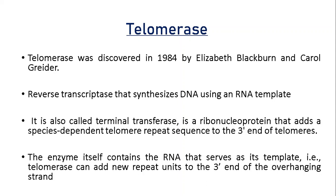Telomerase was first discovered by Elizabeth Blackburn and Carol Greider in 1984. It is a reverse transcriptase that synthesizes DNA using an RNA template. Unlike other reverse transcriptases, telomerase is also called terminal transferase. It is a ribonucleoprotein that adds species-dependent telomere repeat sequences to the 3' end of telomeres. Because it is species-dependent, it ensures that the repeated sequence in the telomere remains the same across different species.